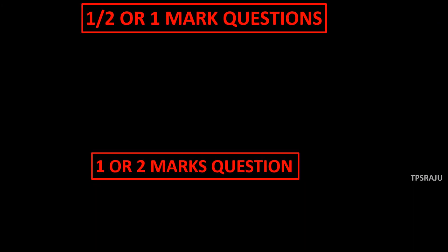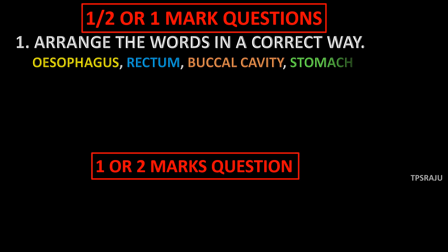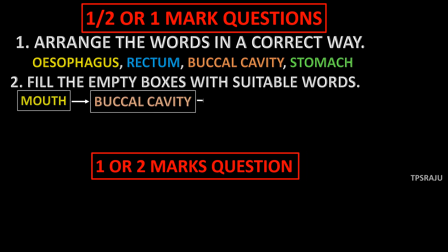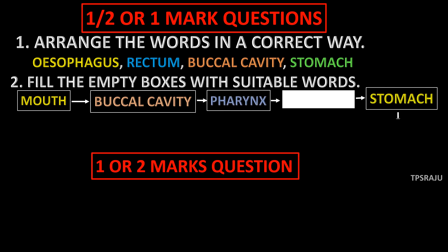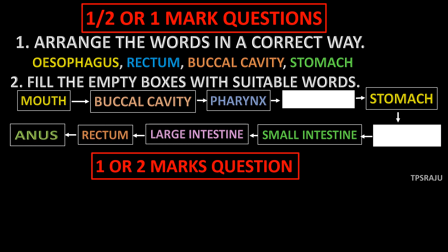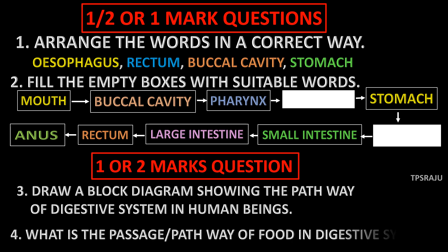Let us observe the different types of questions based on the flowcharts. 1. Arrange the words in correct way: Esophagus, Rectum, Buccal cavity and Stomach. 2. Fill the empty boxes with suitable words. 3. Draw a block diagram showing the pathway of digestive system in human beings. 4. What is the passage or pathway of food in digestive system?